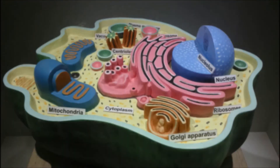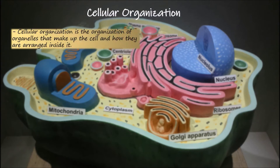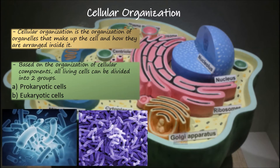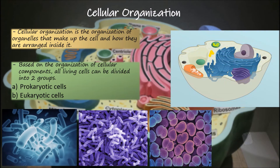Cellular organization is the organization of organelles that make up the cell and how they are arranged inside it. According to cell theory, the cell is the basic unit of life. Based on the organization of cellular components, all living cells can be divided into two groups: prokaryotic cells and eukaryotic cells.